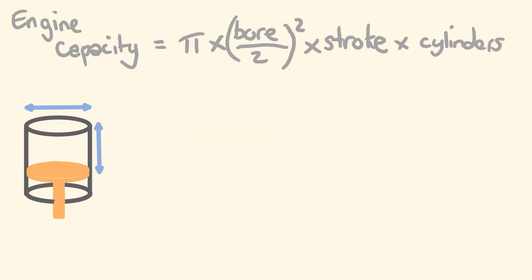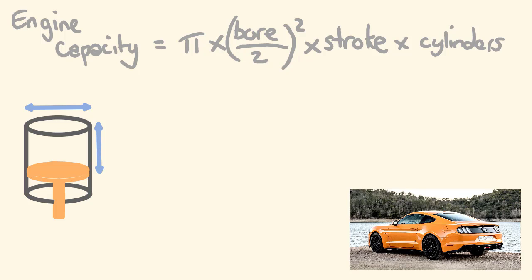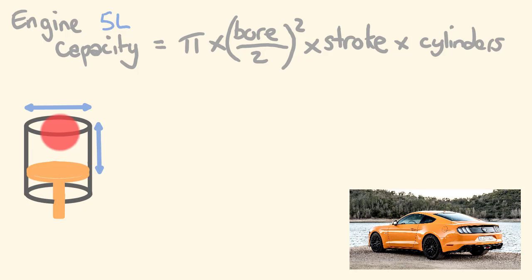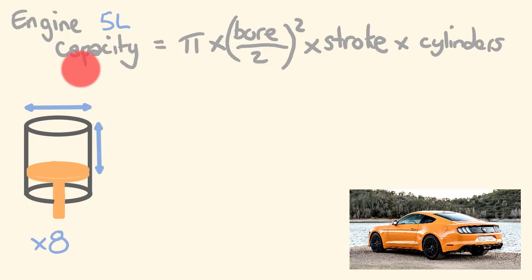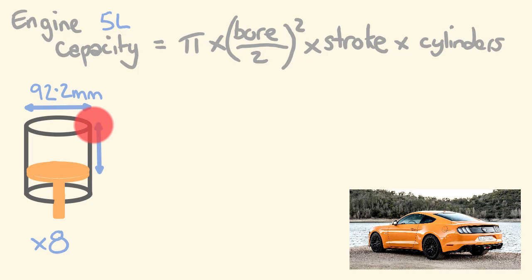For the first example, I'm going to look at a 5-litre Ford Mustang. We already know the engine capacity should be around 5 litres. A 5-litre Ford Mustang is a V8 engine, which means it has eight cylinders. So we'll be multiplying our cylinder volume by eight. The bore is 92.2 millimetres and the stroke is 92.7 millimetres.